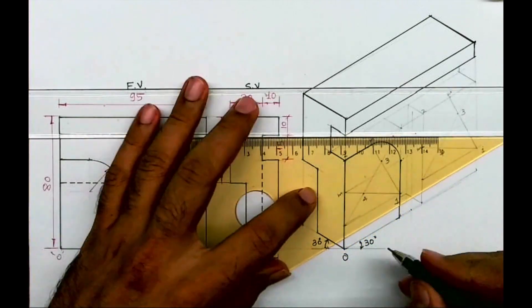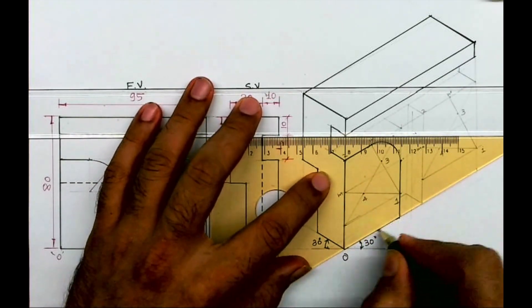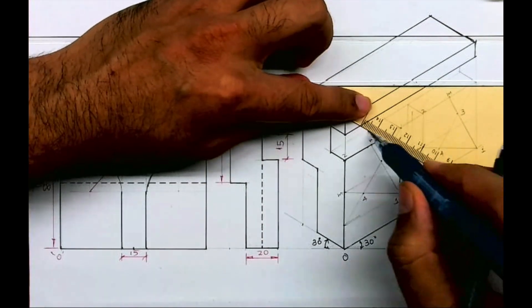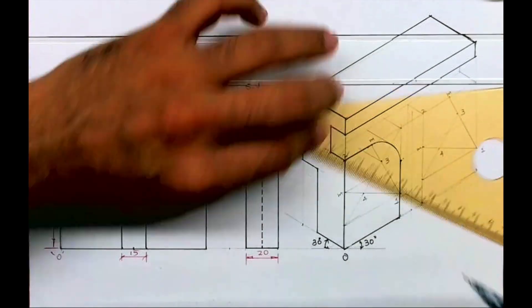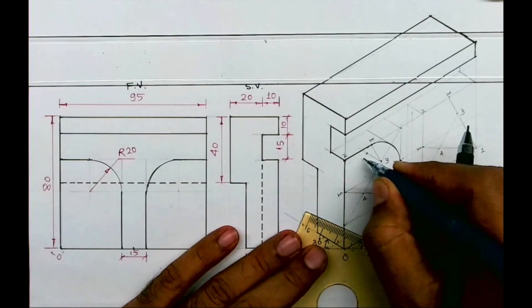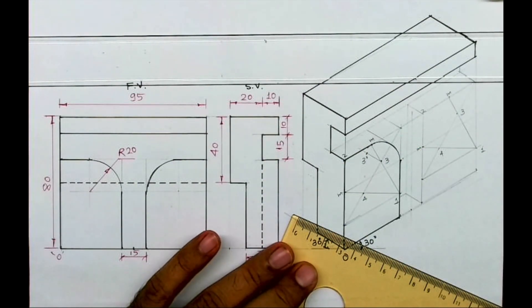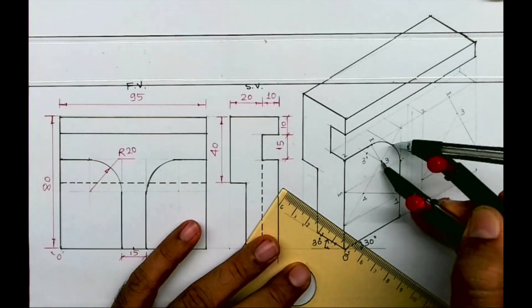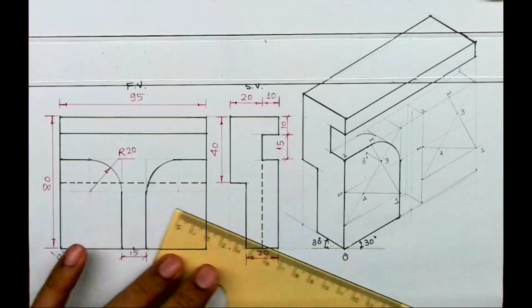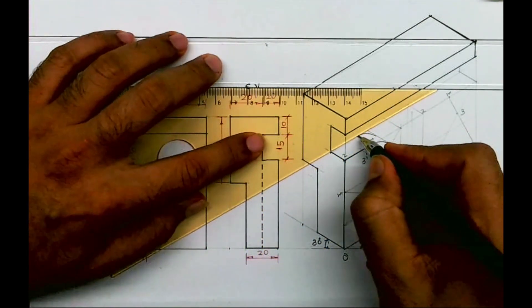So all of you understood how to draw this part. I can take this part behind by 10. I'll take this point three inside by 10. That is three dash. Now I'll take radius from three dash. I will draw arc and I will join this.